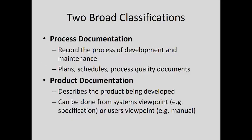There are two broad classifications. Process documentation records the process of development and maintenance — plans, schedules, process quality documents. Product documentation describes the product being developed, from a systems viewpoint such as a specification, or from a user viewpoint such as a user manual or quick reference guide. Agile methods are very much against process documentation, and I have sympathy for this view, but sometimes it's really necessary. As an agile team you need to be co-located, have the client on site, and have explicit trust with the client. If you don't have all these things, you're going to need some form of process documentation to back yourself up in case of a disagreement.